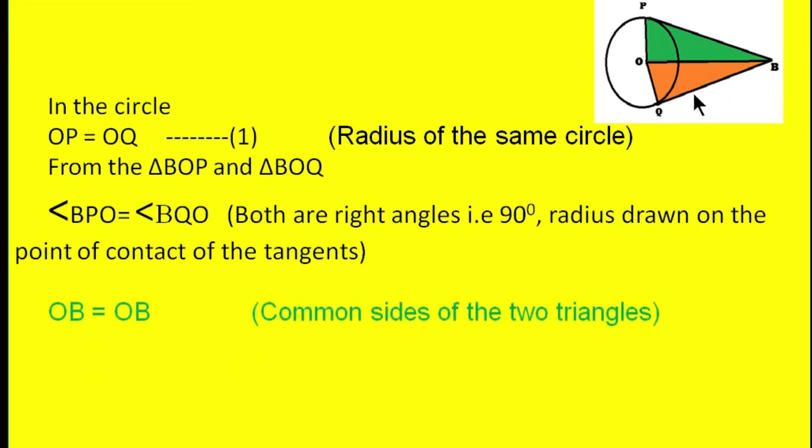Next, OB equal to OB means the same side, or we can say common sides of the two triangles. Next, OP equal to OQ from one. Thus by RHS—RHS means right angle, hypotenuse, side.